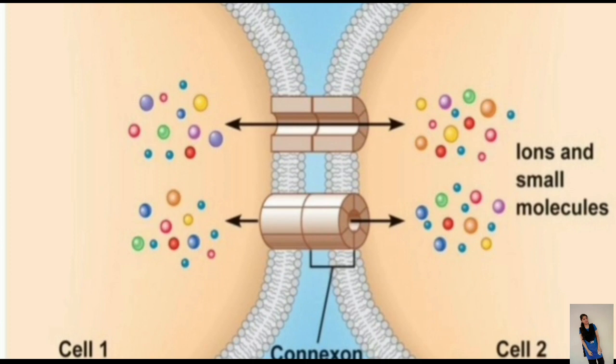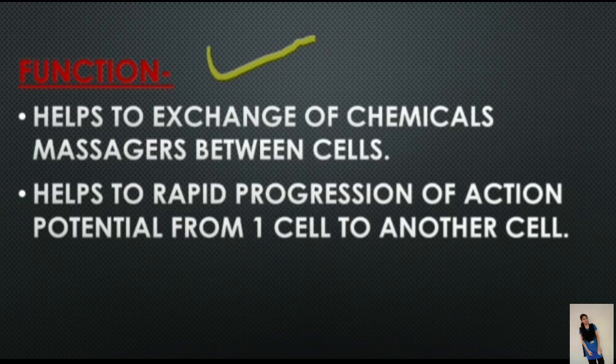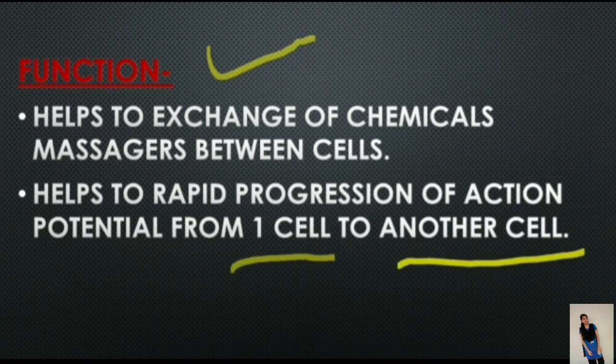Here in this picture you can see the gap junction — it is the intercellular junction which allows the passage of ions and small molecules between two adjacent cells. Its functions include helping in the exchange of chemical messengers between cells, and helping in the rapid progression of action potential from one cell to another cell.